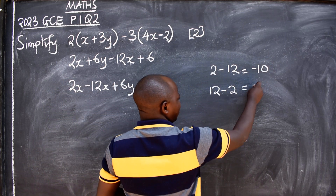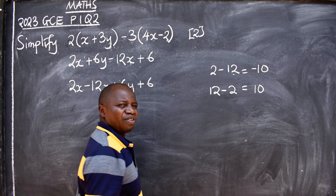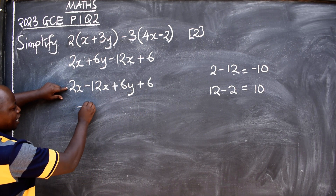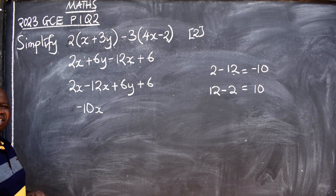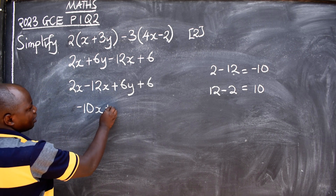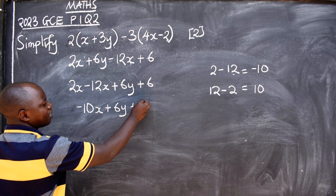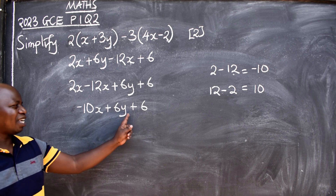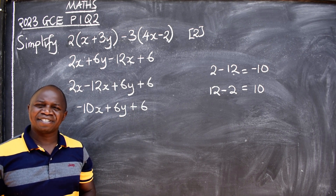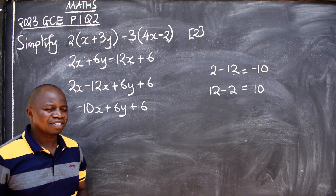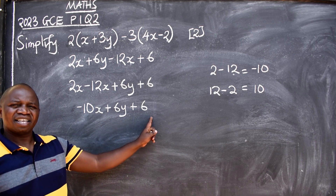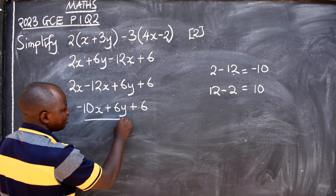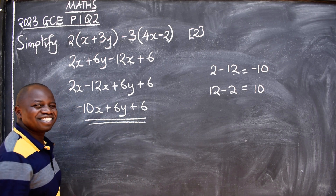Here you are going to get negative 10, not positive 10 — these two are not the same. So the answer we have will be negative 10x, plus 6y, plus 6. Can these three terms be added? No, you cannot add them because they are not like terms. So this is your final answer: negative 10x + 6y + 6.